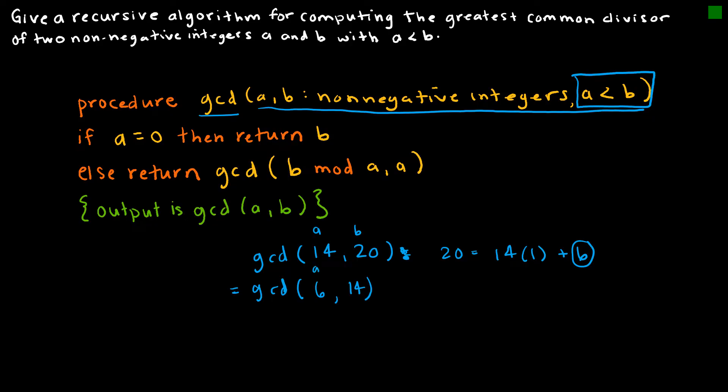Now the smaller value is A and the larger value is B. I'm still not where it says if A equals zero, then return B, because A is not zero. So I have to do it again. That one says 14 is equal to 6 times 2 plus 2, which means this is equal to the GCD of B mod A, which is 2, and 6. Now 2 becomes A and 6 becomes B.